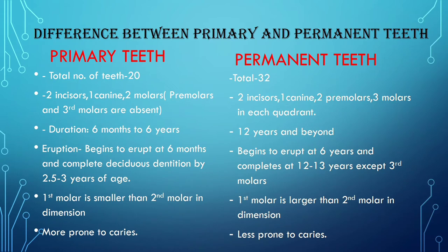When talking about eruption, primary dentition begins at six months and complete deciduous dentition is achieved by 2.5 to 3 years. In permanent dentition, eruption begins at the age of six years and is complete by 12 to 13 years, except for the third molars. The eruption sequence in primary dentition is: incisor first, then first molar, then canine, then second molar.